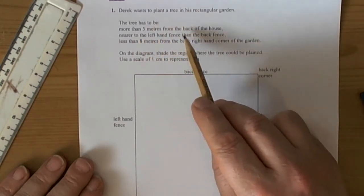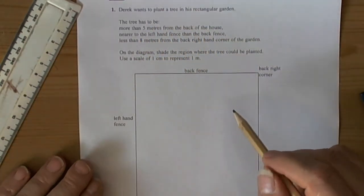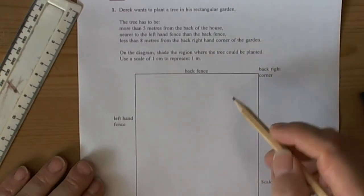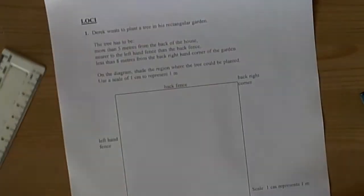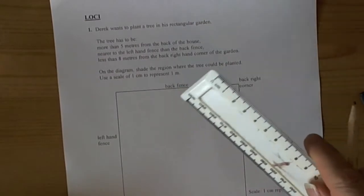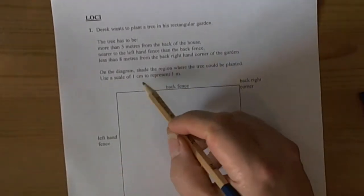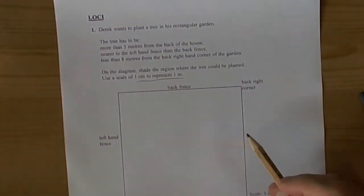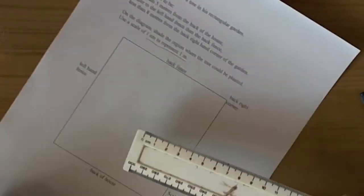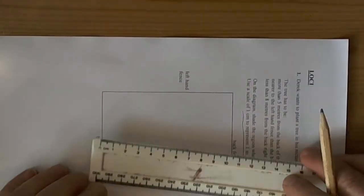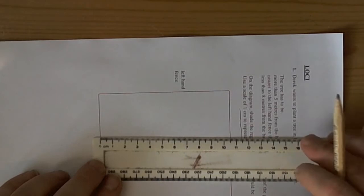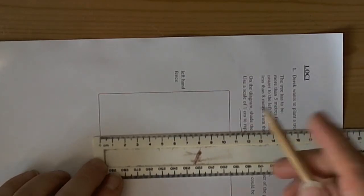The tree has to be more than 5 metres from the back of the house. The back of the house is a straight line, so therefore we'll have to draw a parallel line. It says 5 metres. We've got a scale of 1 centimetre represents 1 metre. So basically take the ruler and draw 3 5 centimetre lines.